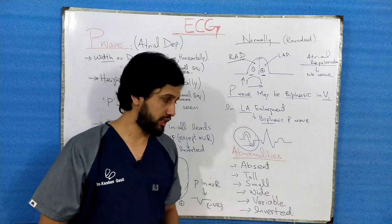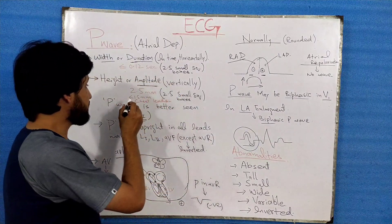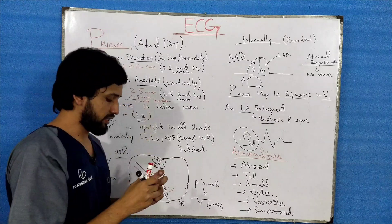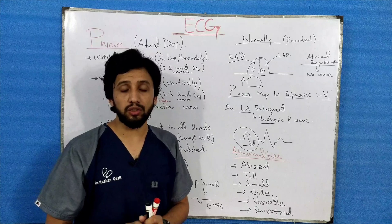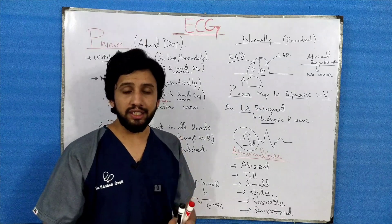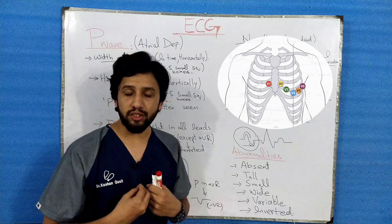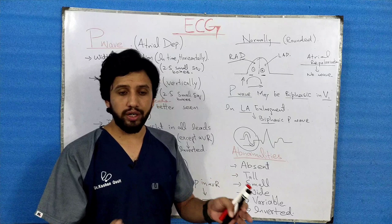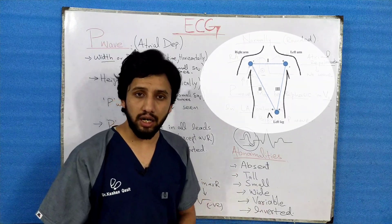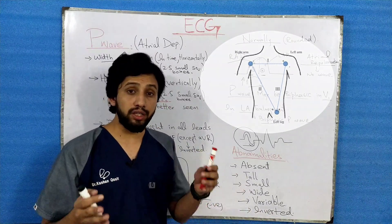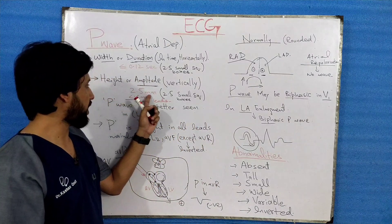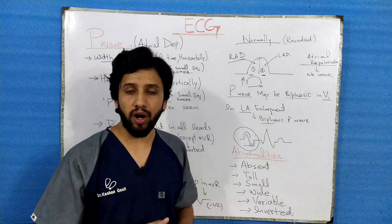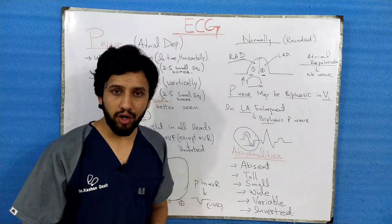The amplitude is measured vertically and is equivalent to 2.5 millimeters, which is also 2.5 small square boxes, in limb leads. In chest leads, the amplitude is normally 1.5 millimeters or less. Chest leads are the leads connected on the chest surface of the body, while limb leads are connected to the limbs.